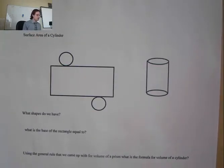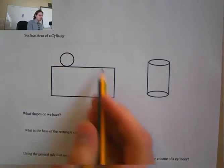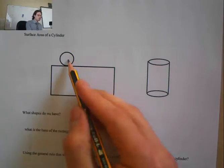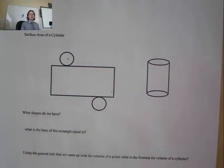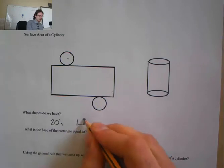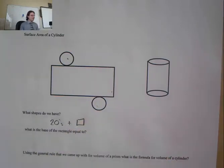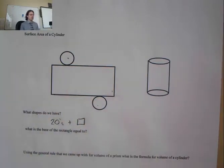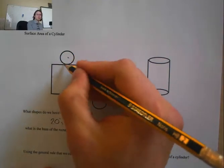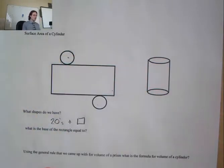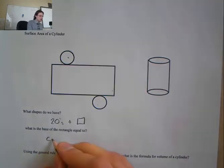Surface area of a cylinder: the net of a cylinder has two circles and a rectangle. The base of the rectangle must equal the circumference of the circle because it wraps all the way around the circle. So the rectangle's width equals the circumference.